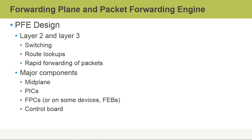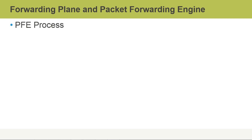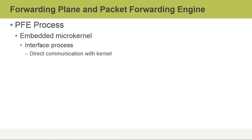Control boards manage communication with the routing engine and the flexible PIC concentrators, or FPCs. An embedded microkernel in the packet forwarding engine functions as the CPU. It communicates with the interface process — which serves as the interface between it and the routing engine — and in turn directly communicates with the kernel of the routing engine. It also communicates with the chassis process to control and monitor functions related to the packet forwarding engine.